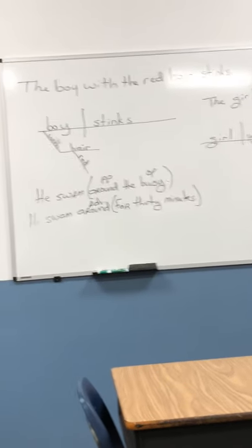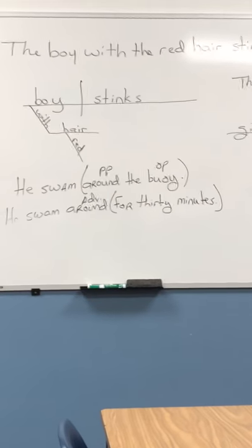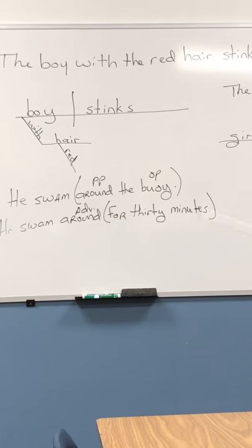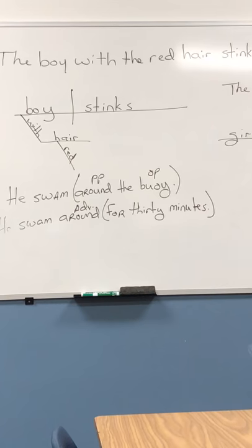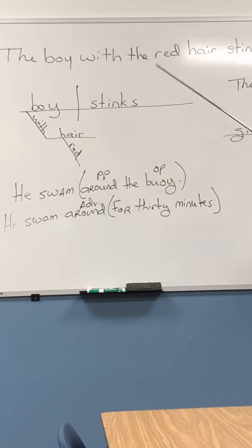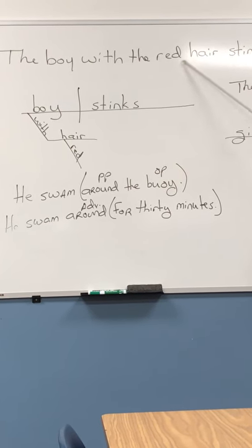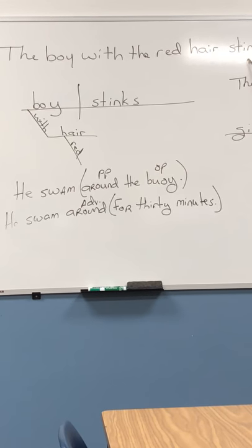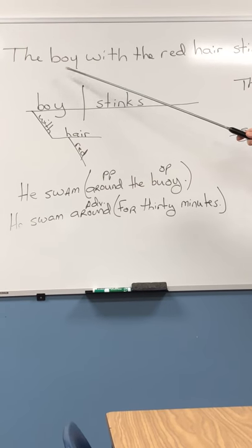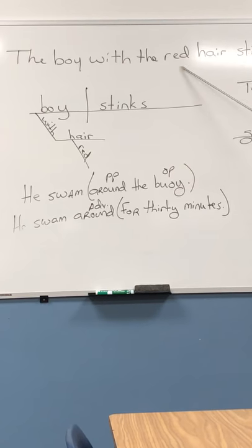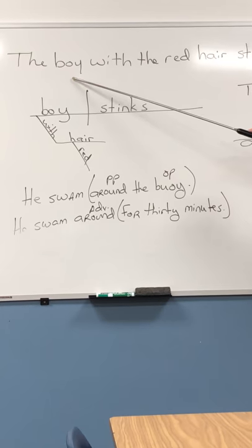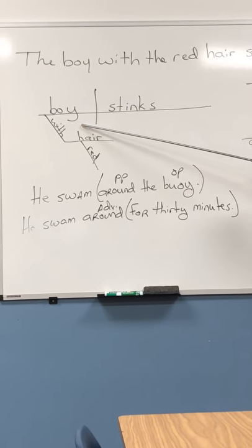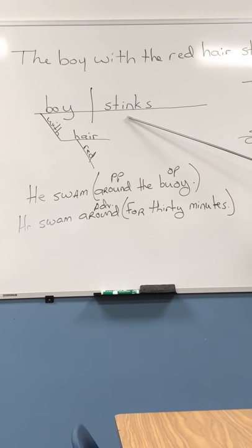I've given you a couple of examples on the board so you can see the difference, and I've shown you how to diagram them. Eighth graders, that's on the bottom of page 135; seventh graders, that's on the bottom of page 147. Our first sentence is: 'The boy with the red hair stinks.' The prepositional phrase is 'with the red hair.' Ask yourself: is this answering a question about 'stinks,' or is it telling you something about 'the boy'? Of course, it's telling you something about the boy — he has red hair. Because it is modifying a noun, this is an adjectival prepositional phrase, and we diagram it under the word that it modifies.